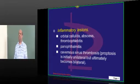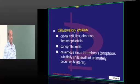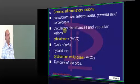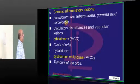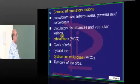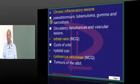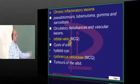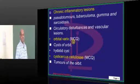What are the inflammatory lesions? Any orbital cellulitis, panophthalmitis, cavernous sinus thrombosis — anything can be responsible. Similarly, pseudo-tumors, tuberculoma, certain circulatory disturbances like orbital varices. Orbital varices — why do you need to remember? This is quite often asked as an MCQ in the entrance exam.